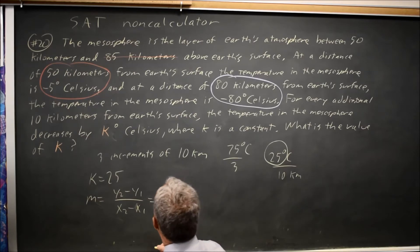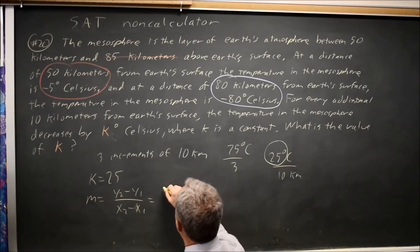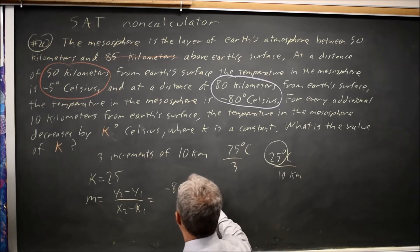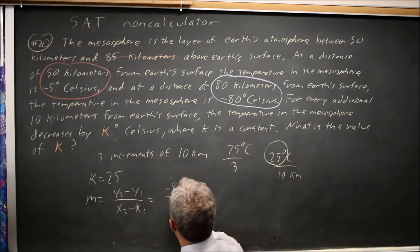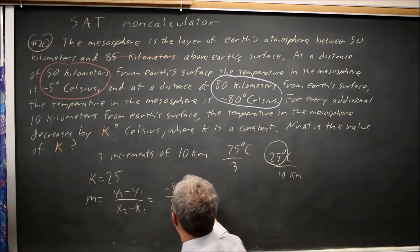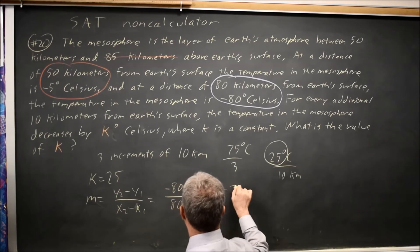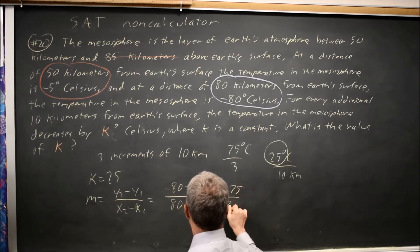Which is negative 80 minus negative 5 over 80 minus 50. 80 goes with negative 80, and 5 goes with 50 kilometers, so that's negative 75 over 30.